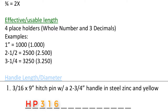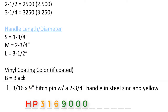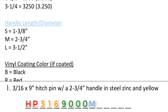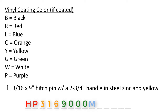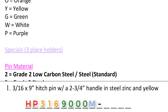Next, we identify the effective or usable length. 9 inches is the grip length, so we would enter 9-0-0-0. Next, we identify the handle length. This handle is called out as 2 and 3/4, which translates to an M. Next, we move on to the vinyl coating. This description does not specify any coating, so we put an automatic dash. Then we have space holders. Typically we have 3 places for specials, but because we have a 3/16 pin that shifted everything down by 1, we drop to 2 space holders for specials to recalibrate and keep within the 15-digit part code. Enter 2 dashes in space holders.